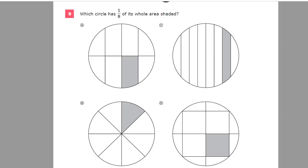This is the grade three math practice test for TN Ready. This is question number nine on this version of the test. Which circle has one eighth of its whole area shaded?